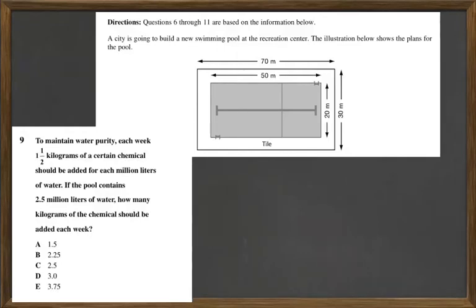For question 9, the picture of the pool really has nothing to do with the problem. It says to maintain water purity each week, 1.5 kilograms of a certain chemical should be added for each million liters of water.